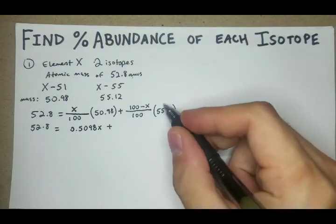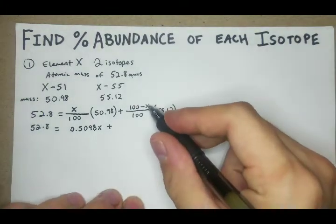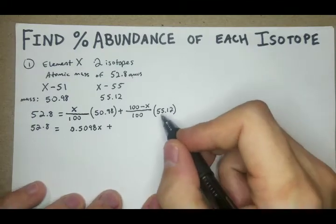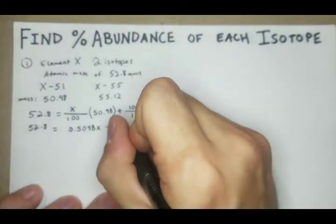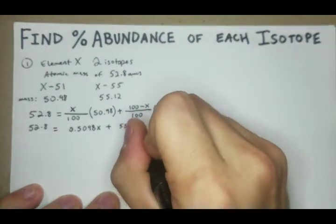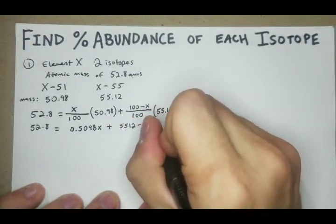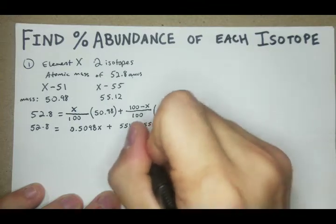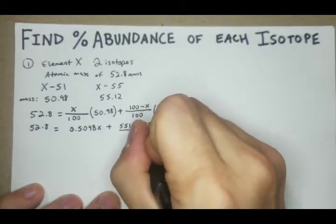For this, it's going to distribute the 55.12 into here. So we're going to have 5,512 minus 55.12X all divided by 100.